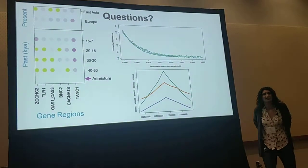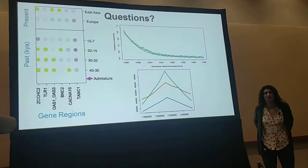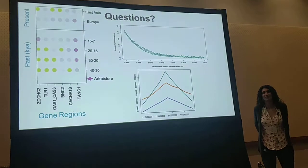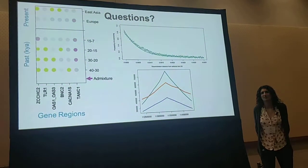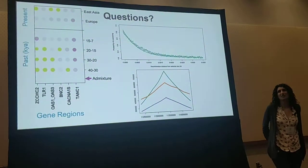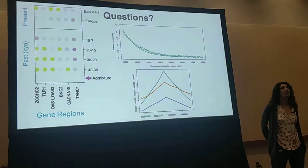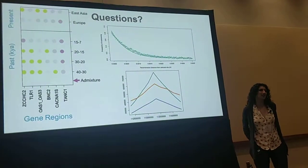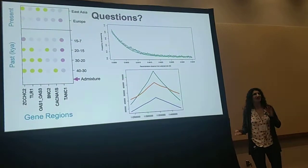Question from audience: In cases where you see a change in frequency after a lag time, is there a possibility that you have a linked deleterious and adaptive allele, and then the lag time is waiting for recombination between them? Response: That's a good question. I think that if there was a deleterious allele, most of them would have been removed rather early on, such that the lag time wouldn't be as long as we observe, so that might not actually explain it.